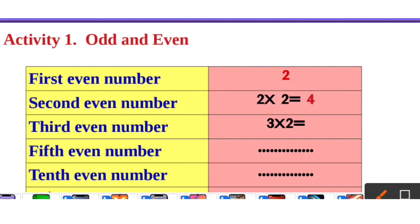The third even number is 3 into 2, which equals 6. The 5th even number is 5 into 2 — multiply 5 into 2 — which equals 10.